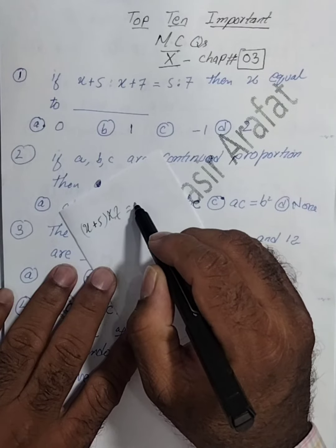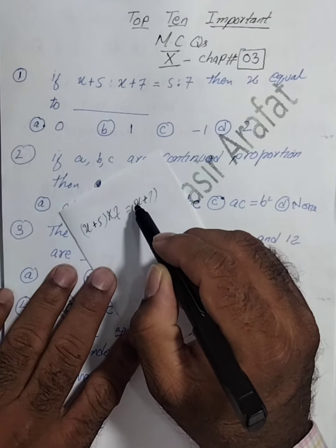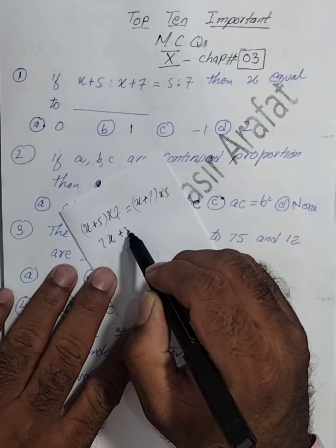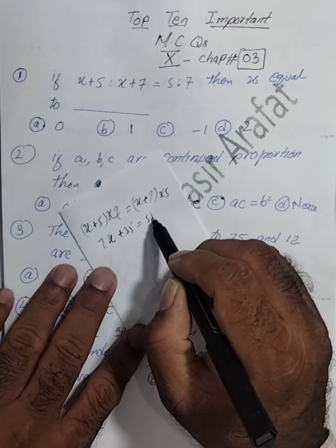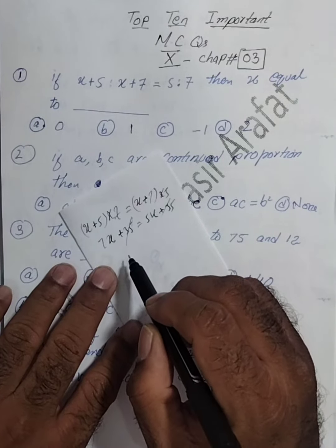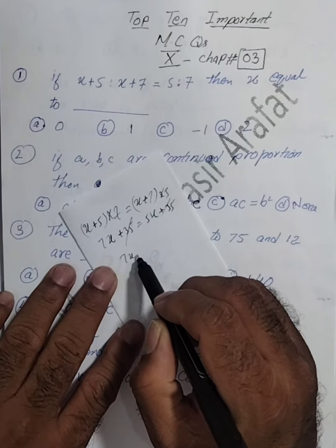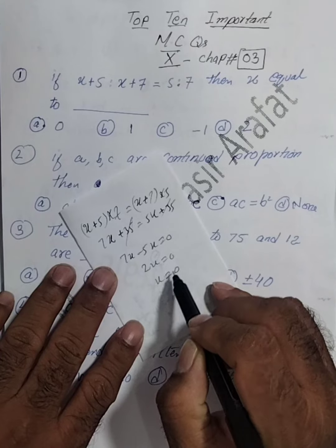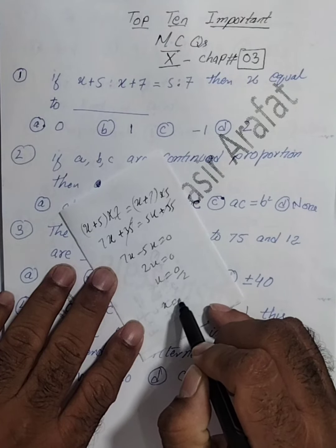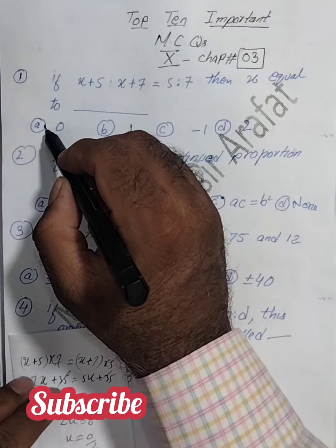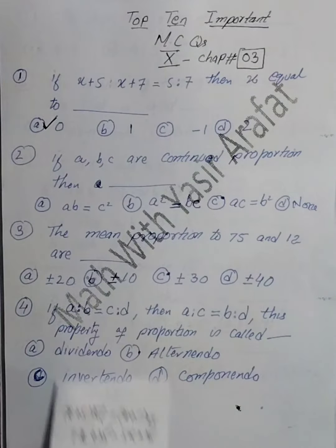So this is 7x, 7 fives are 35. 5x, 7 fives are 35. 35 and 35 cancel, so 7x minus 5x equals 0. So 2x equals 0 and x equals 0 upon 2. So the value of x is 0. So here the correct option is a, that is 0.